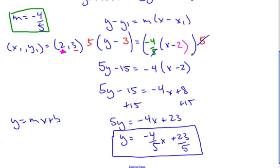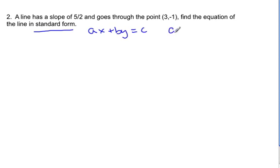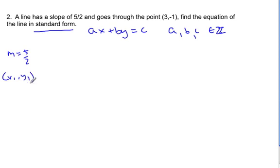Let's try the next equation problem. A line has a slope of 5/2 and it goes through the point (3, −1). Find the equation in standard form. Standard form looks like ax plus by equals c, where a, b, and c must be integers. So I need my slope, which is 5/2, and I need a point (x₁, y₁), which is (3, −1).